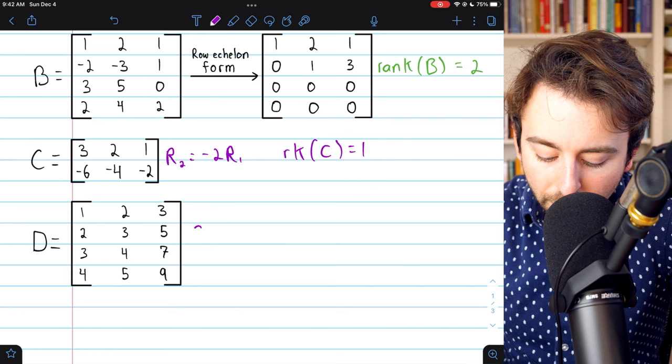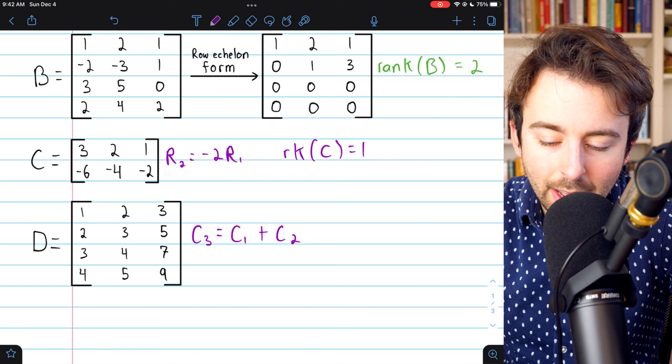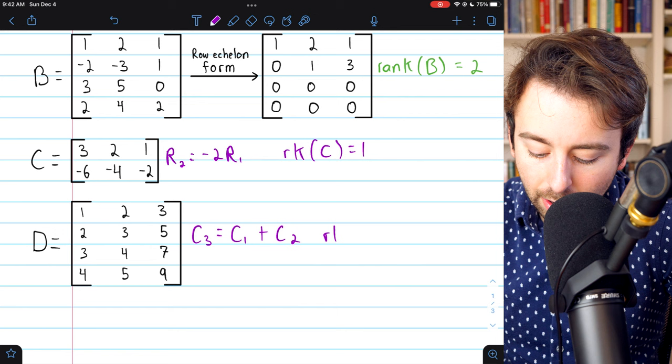However, column three is a linear combination of the first two columns. In fact, if we just add column one and column two, that gives us column three. So, the matrix D has only two linearly independent columns, and we would say that the rank of D is equal to two.